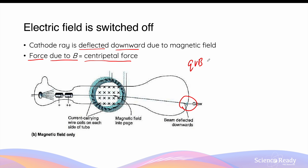The force due to the magnetic field, which is QVB, is equal to the centripetal force, which is MV squared over R. This simplifies into QB equals MV over R.